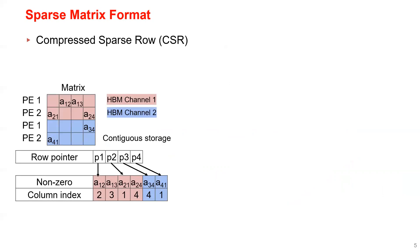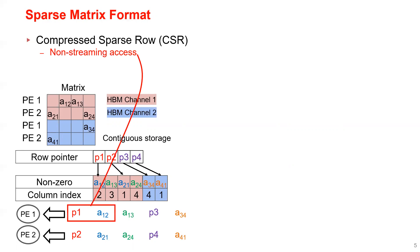Here is an example of a 4x4 matrix accessed by two processing engines, and there's the access pattern. Since CSR relies on the row pointer to denote the start location of each row, the PEs need to read the row pointer array before loading the actual data, which causes non-streaming access.